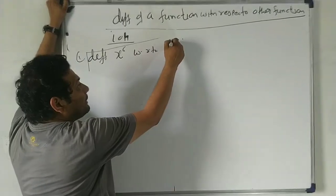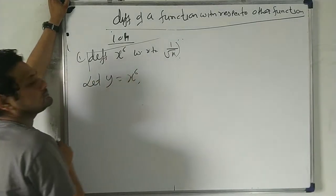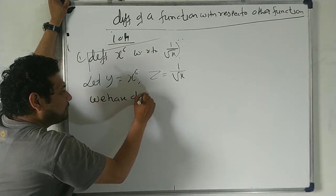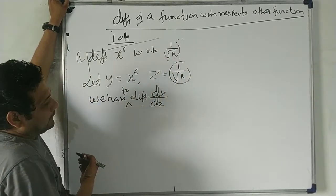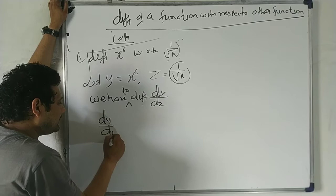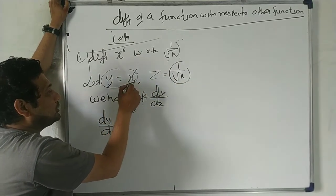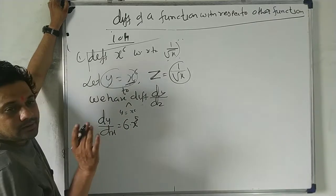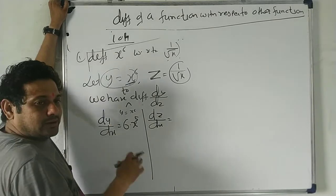We have to differentiate x^6 with respect to 1/√x. So let y = x^6 (first function) and z = 1/√x (second function). Our goal is to find dy/dz. To find dy/dz, we first compute dy/dx and dz/dx separately. Then dy/dz = (dy/dx) ÷ (dz/dx). dy/dx of x^6 = 6x^5.